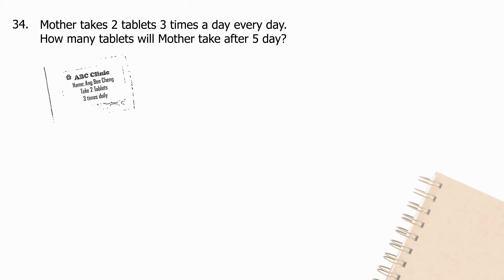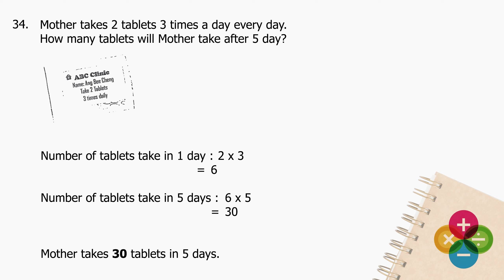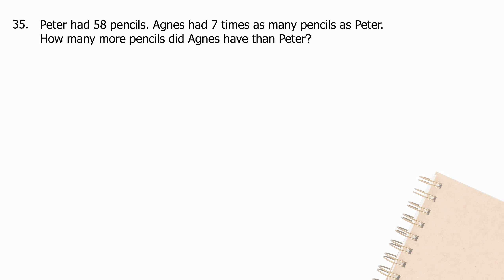Question 34: Mother takes 2 tablets 3 times a day every day. How many tablets will mother take after 5 days? Tablets in 1 day: multiply 2 by 3 and the product is 6. Tablets in 5 days: multiply 6 by 5 and the product is 30.